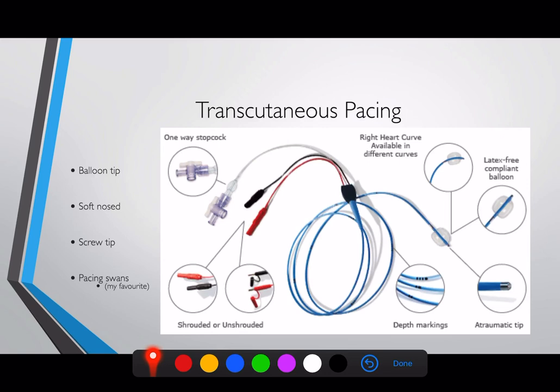And then there are pacing swans — not that common in the UK but fantastic; they provide a pacing wire plus lumens for other medications such as noradrenaline. Most pacing wires have two electrodes — positive and negative — and a port that allows entry into the vein. They are placed with a Seldinger technique. Please check out my videos on central line placement, as the first part of placing a temporary pacing wire is basically the same.